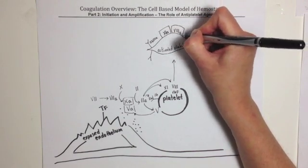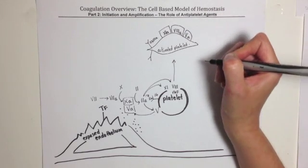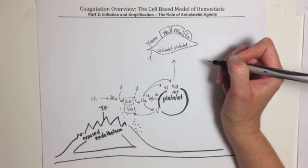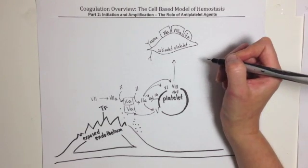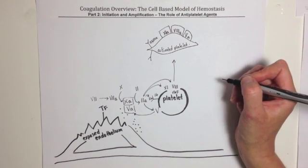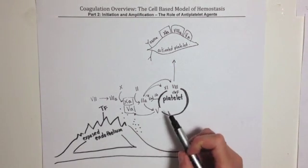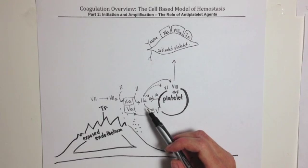The activation of all of this coagulation machinery on the surface of the platelet marks the end of the amplification step. Now, hopefully, it's obvious why platelets play such a critical role in the pathophysiology of acute coronary syndromes. While thrombin is the most critical platelet activator, there are several other methods to activate platelets that we must mention.